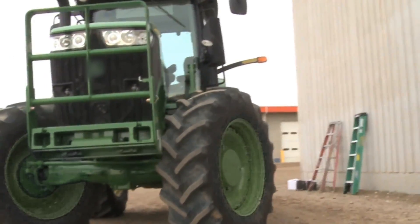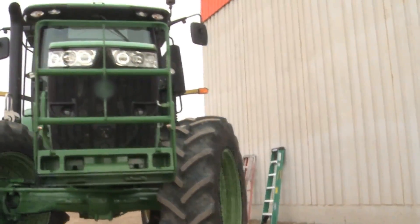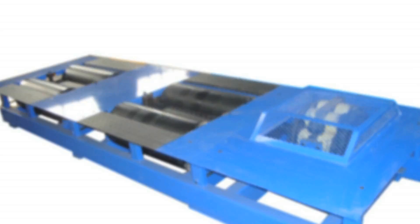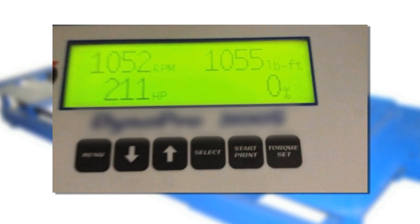This John Deere 7200R tractor dyno tested at 211 horsepower stock with its 6.8 liter engine.